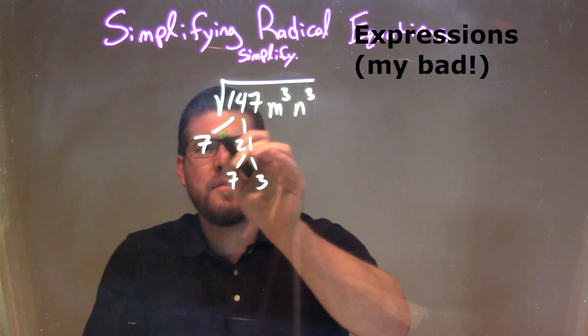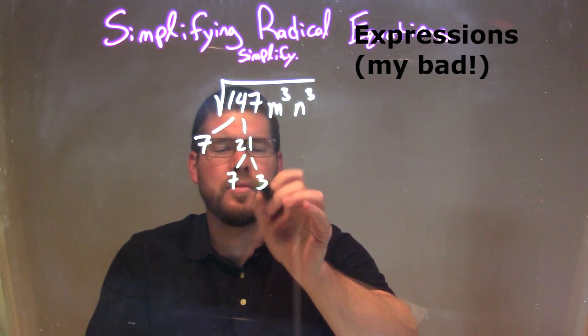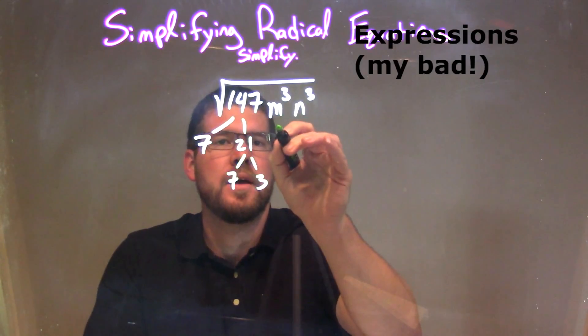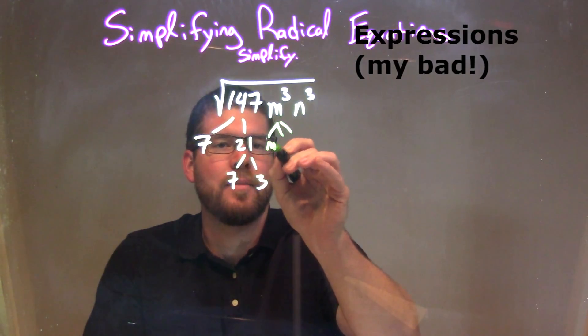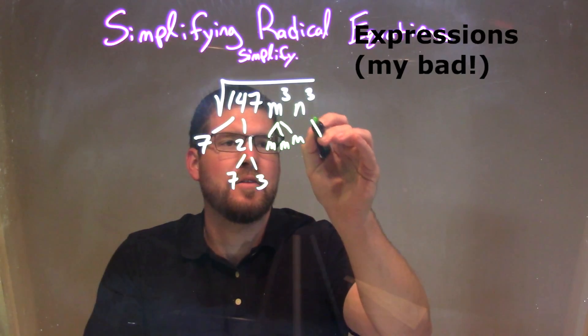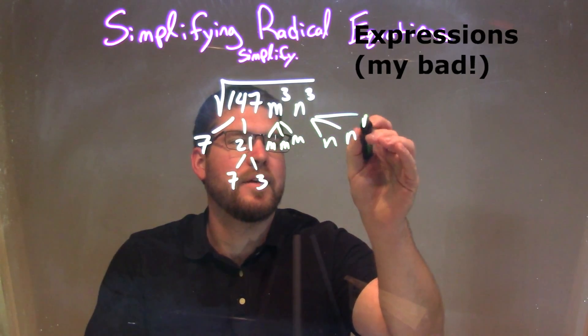Now, 147 means 7 times 21 and 21, 7 times 3. We've broken down to all of our prime factors, our prime factorization. m to the third is just m times m times m, and n to the third is just n times n times n.